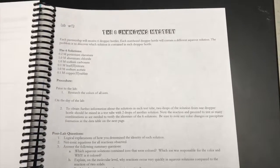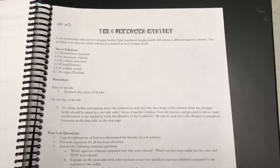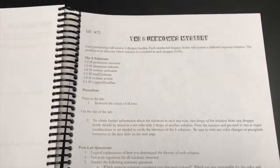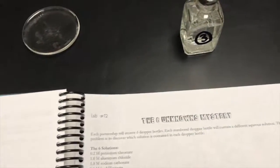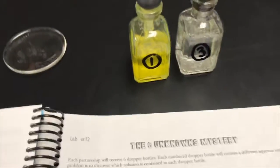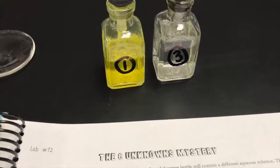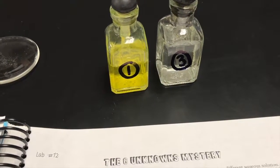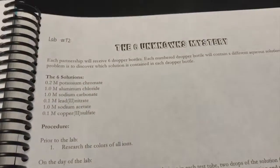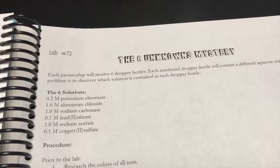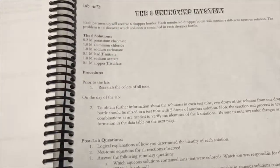In this laboratory experiment, you're going to have six unknown solutions. You'll notice on the lab bench there are dropper bottles with specific numbers, and your job is to figure out the identity of all six solutions using your solubility rules and double replacement reactions.